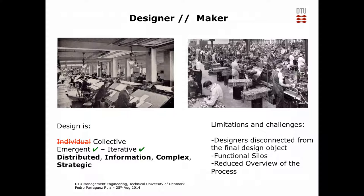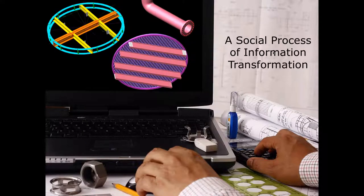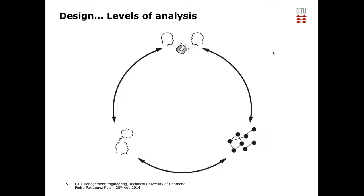We want to create more connections between groups of designers, which involves complexity, and we need to design a system to respond to this. In that sense, we start thinking about designing design. We move toward network design — collaborative design where designers and makers jointly work out a solution in extended, distributed development networks. Design is very much a social process of information transformation.